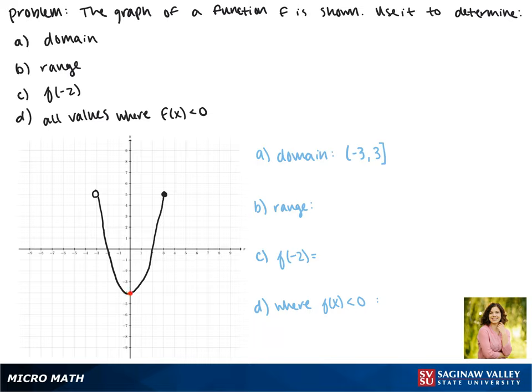Now our range describes the y's, and here we go from negative 4 up to 5. The y value of 5 actually corresponds to two points. Since at least one of them has a closed circle, we can use square brackets for both negative 4 and 5.